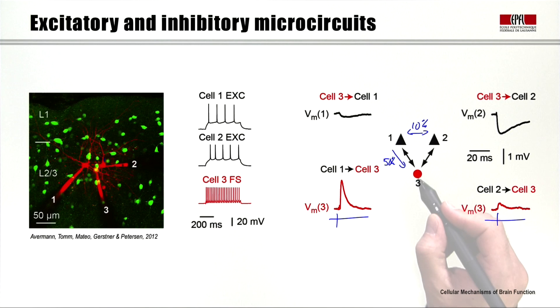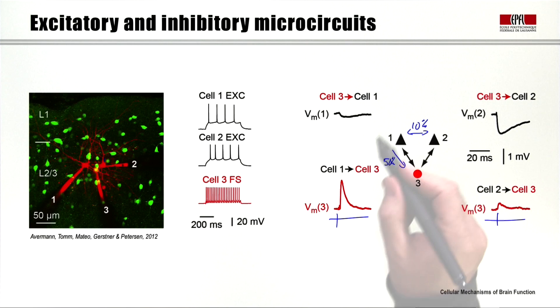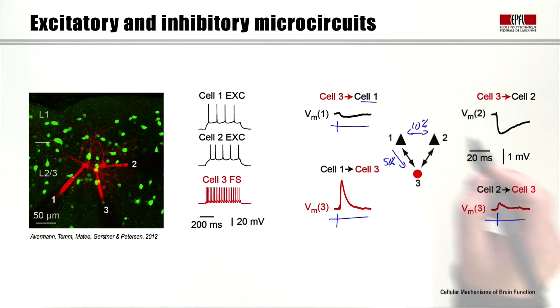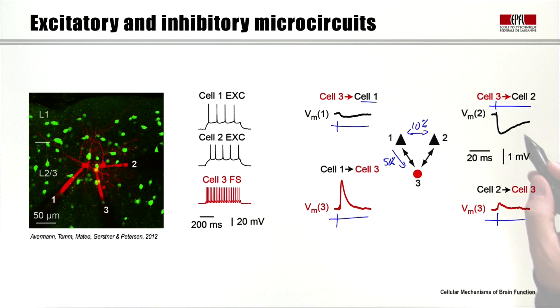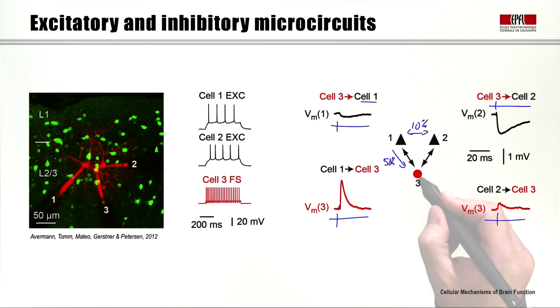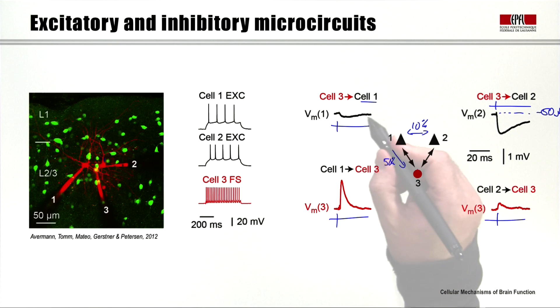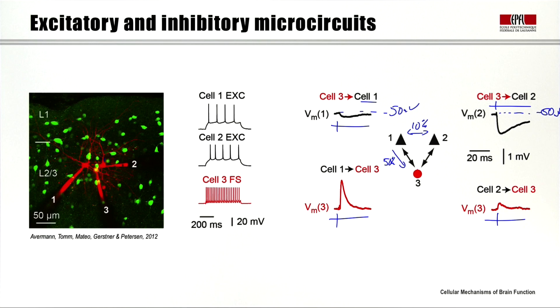We can also evoke action potentials in the parvalbumin-expressing GABAergic neuron and see what happens in the excitatory cells. An action potential fired in cell 3, our fast-spiking GABAergic neuron, causes an inhibitory postsynaptic potential in cell 1, and also an IPSP in cell 2, so cell 3 inhibits both cells — bidirectional synaptic connections. To see these IPSPs, we depolarize the postsynaptic cell to minus 50 millivolts rather than resting membrane potential.